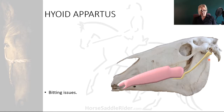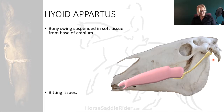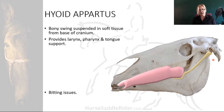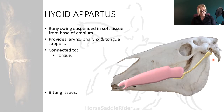The hyoid is not directly connected with the skull. It connects to the muscle tissue of the tongue, providing structure and support to the larynx, pharynx and tongue. It connects to the tongue muscle tissue, the mandible, the temporal bone and the sternum.